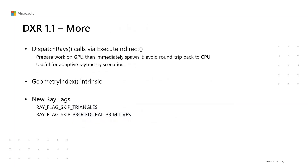There are a few more functions added to DXR 1.1. DispatchRays calls via execute indirect enables shaders on the GPU to generate a list of DispatchRays calls including their individual parameters, and that list can execute without an intervening round-trip back to the CPU. This could help with adaptive ray tracing scenarios like shader-based culling, sorting, classification, and refinement. The geometry index intrinsic is a convenience to allow shaders to distinguish geometries within bottom-level acceleration structures. DXR 1.1 also added a few ray flags — implementations might make pipeline optimizations knowing that one of the primitive types can be skipped everywhere.